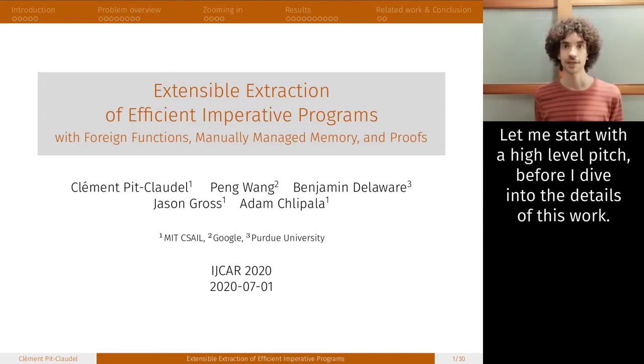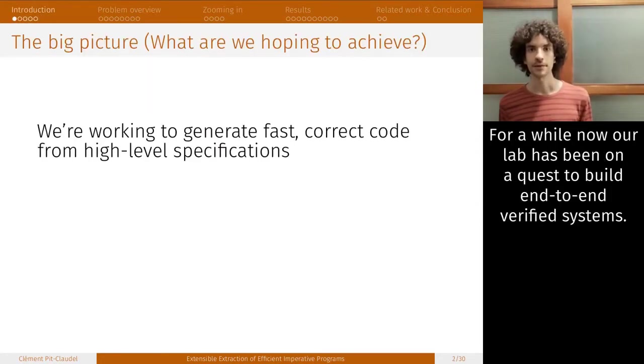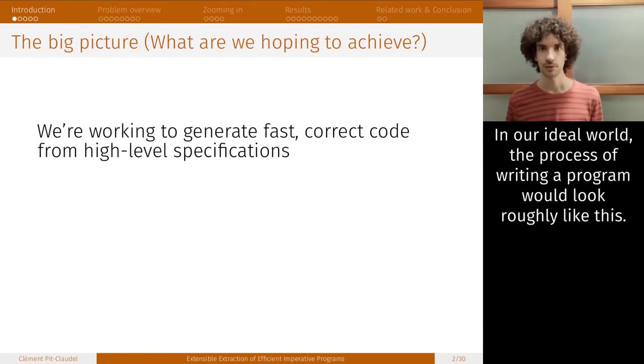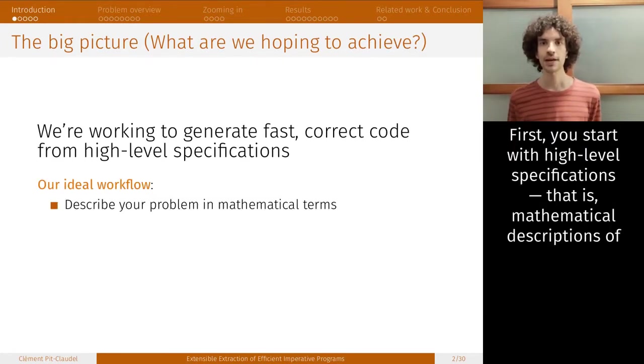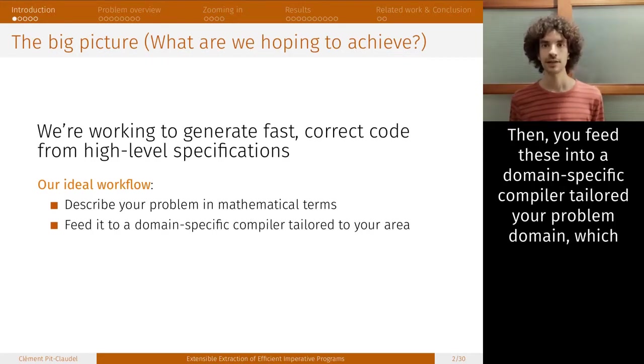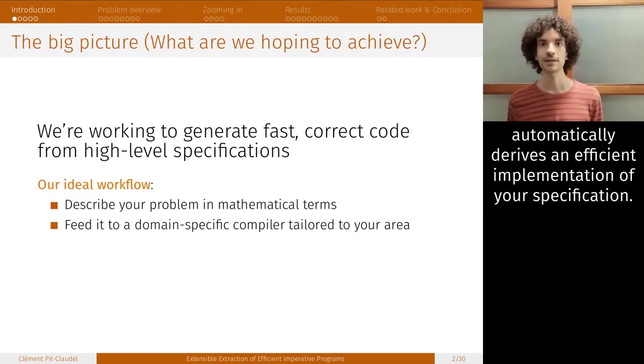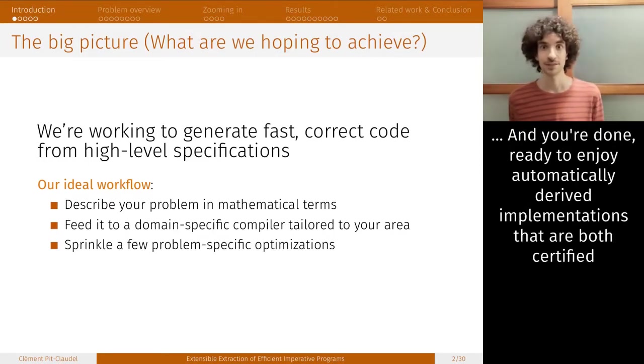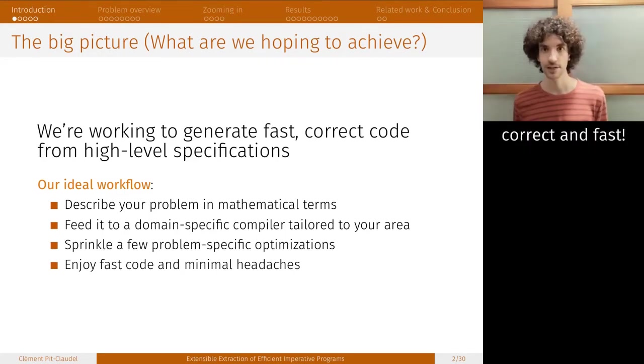Let me start with a high-level pitch before I dive into the details of this work. For a while now, our lab has been on a quest to build end-to-end verified systems. In our ideal world, the process of writing a program would work roughly like this: First, you start with high-level specifications, that is, mathematical descriptions of the behaviors you expect from your program. Then you feed these into a domain-specific compiler, tailored to your problem domain, which automatically derives an efficient implementation of your specification. Optionally, you add a few more optimization hints into the mix to get even better code. And you're done.